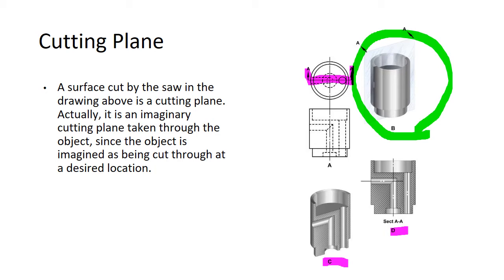A surface cut by the saw in the drawing above is a cutting plane. Actually, it is an imaginary cutting plane taken through the object, since the object is imagined as being cut through at a desired location. We're just cutting that apple.